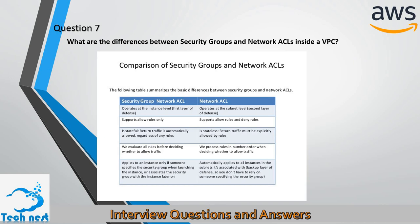Security groups support allow rules only. However, network ACLs support both allow rules and deny rules. Security groups are stateful. In a security group, all rules are evaluated before deciding whether to allow traffic. In a network ACL, rules are processed in number order when deciding whether to allow traffic.